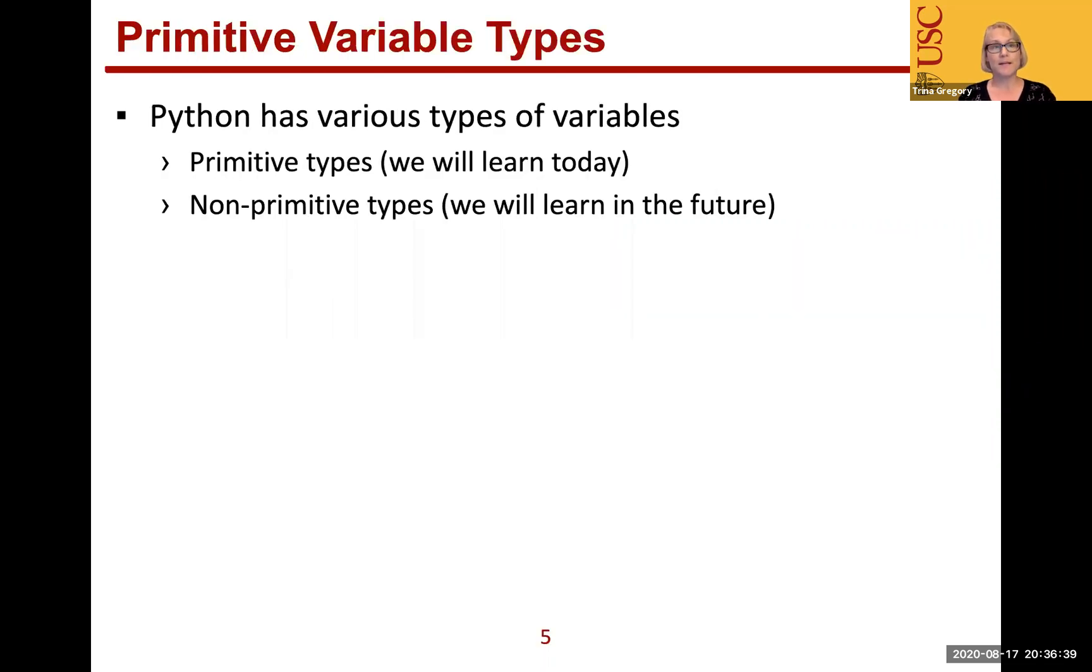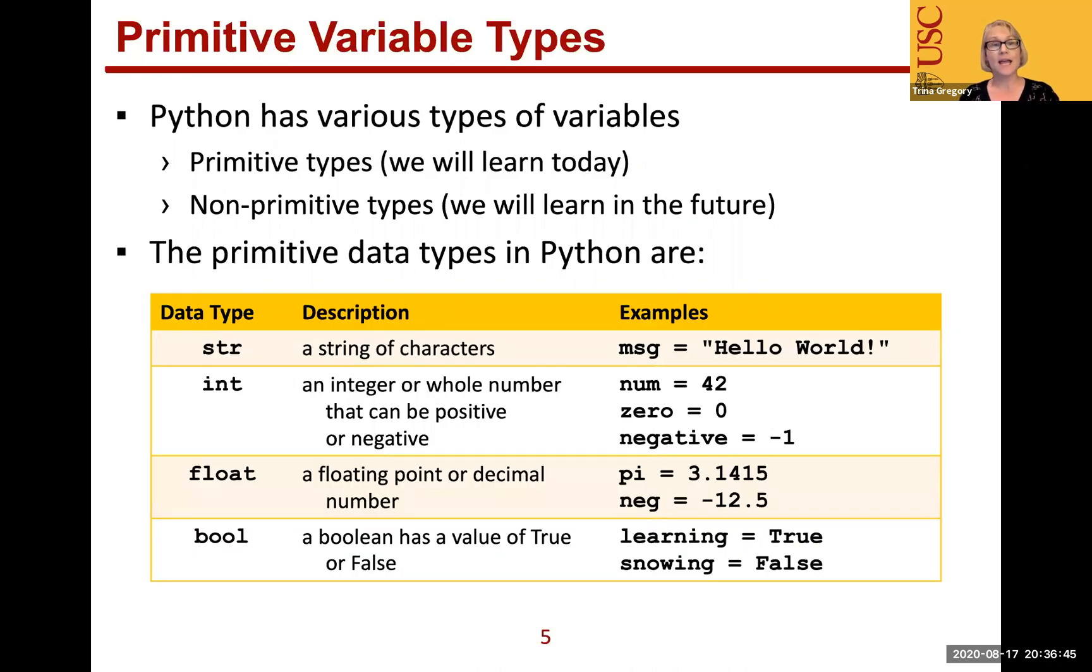We have some primitive types. We also have some non-primitive types, and we'll do those in the future. But today, we're going to talk about the primitive data types in Python. The first one is a string, or str, S-T-R. That's a string of characters, any kind of characters that you would see on your keyboard. For example, we could create a variable named message, MSG equals, and then double quotes for hello world, exclamation mark. So the variable name is message, and the value is hello world.